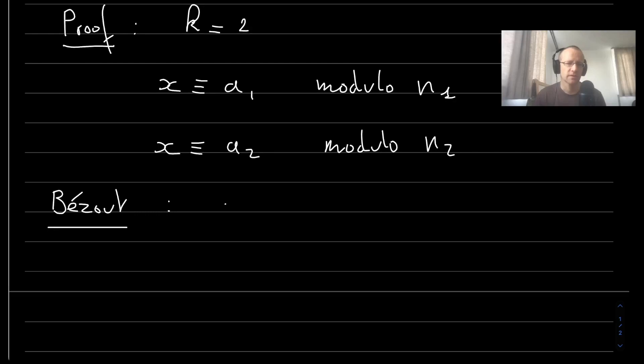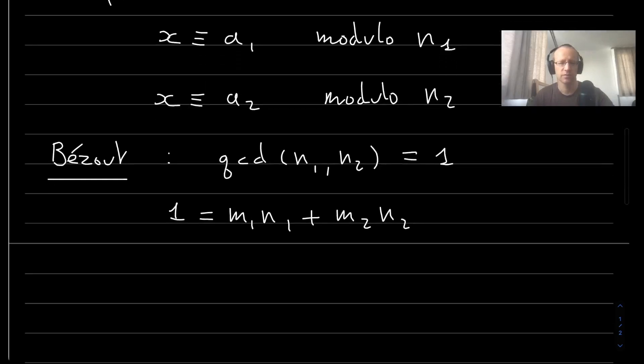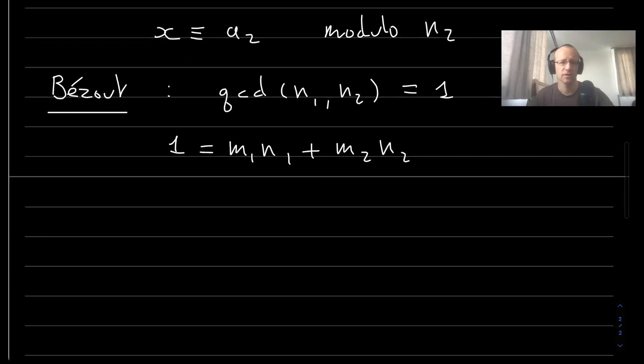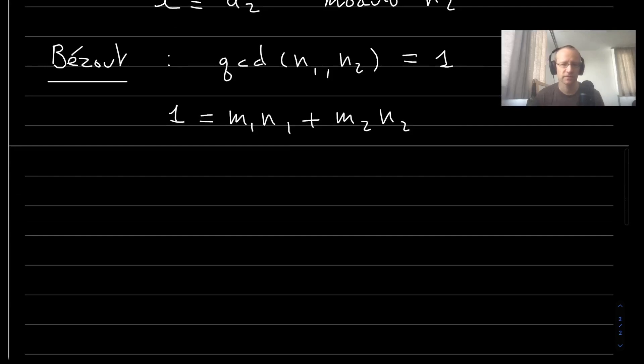We have that if the greatest common divisor of n_1 and n_2 is 1, then there are integers m_1 and m_2 which give a linear combination of n_1 and n_2 which is 1, namely the greatest common divisor. So these integers exist.